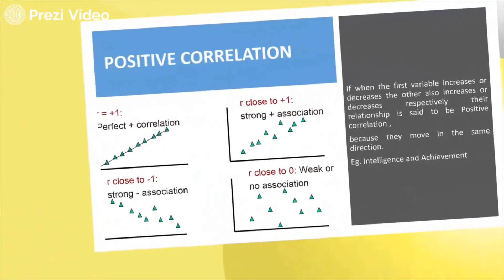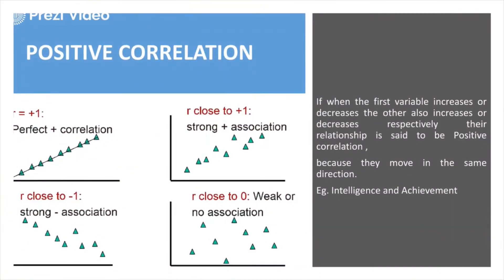So I hope you are now clear what is correlation, what are variables, and how the values of the correlation coefficient determine three categories: positive correlation, negative correlation, and zero correlation. A good example of positive correlation is intelligence and achievement — if a person is very intelligent, there are high chances that his achievements would be more.